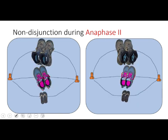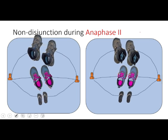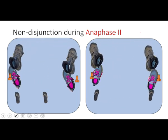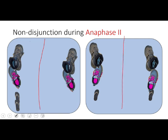But could this happen in the next phase — in anaphase two? Here we are right at metaphase two. We've got two cells already with three chromosomes each, and we divide. On the right, everything happened normally. On the left, this little guy didn't divide right. If we divide these up again into our four gametes, one has four chromosomes and another only two. But the ones on the right are okay, so there's a chance, if it's during meiosis two, to get some normal gametes.